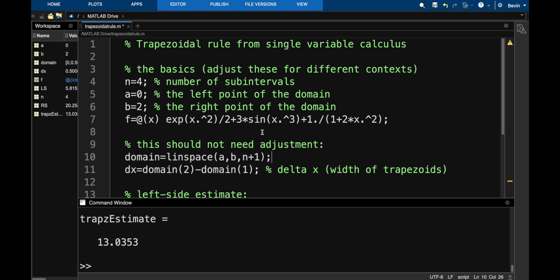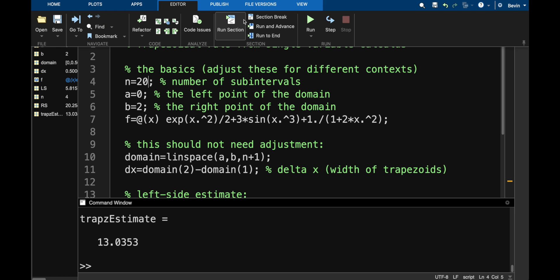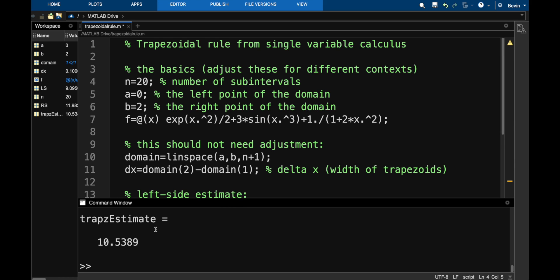Let me now take this domain and chop it into finer pieces. So how about we do 20 subintervals? This would be a pain to do by hand, but now in MATLAB, I'm just going to run this and we get that our estimate has decreased to about 10.54.